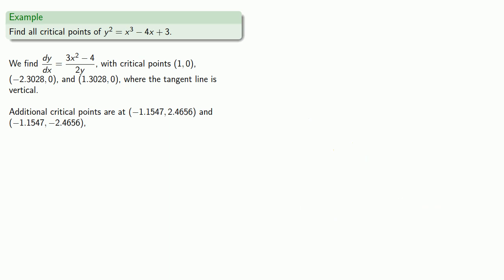To determine whether these are local maximum or minimum values, we might consider the second derivative. But that would be a nightmare since this is an implicit function expressed as a quotient. Instead, we'll do a first derivative test. Since our derivative is in terms of both x and y, we evaluate our critical points based on both their x and y values.